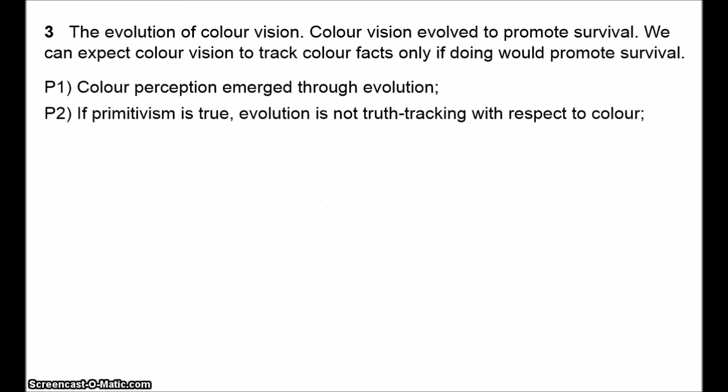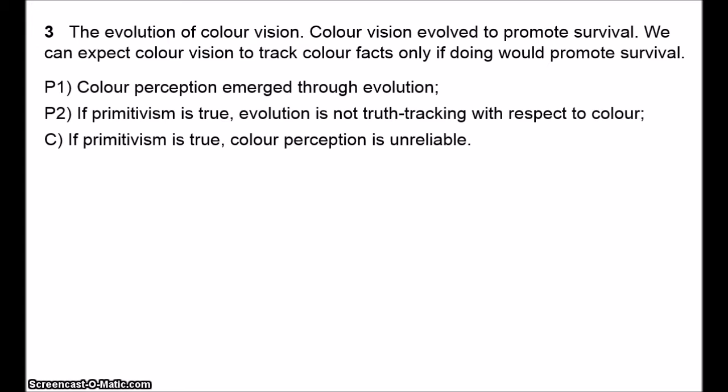Here's the basic evolutionary argument against primitivism. First, colour perception emerged through evolution. Second premise: if primitivism is true, evolution is not truth-tracking with respect to colour. Conclusion: if primitivism is true, colour perception is unreliable. So we're not justified in supposing that any of our colour perceptions accurately represent the external world.